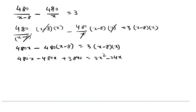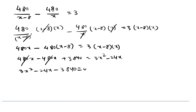Distributing, this gives 480x minus 480x plus 3840 is equal to, distributing, 3x squared minus 24x. Collecting all terms on one side, we get 3x squared minus 24x minus 3840 is equal to 0.